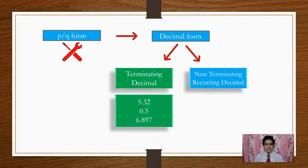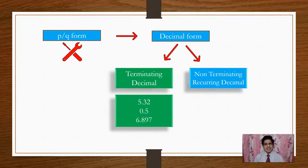Examples of Terminating Decimals are 5.32, 0.56, 0.897. By looking at the decimal, we can tell very easily whether it is Terminating or Recurring. When you have no bar or no 'and so on' — no dots at the end — it means the division has ended. Those numbers are Terminating Decimals.